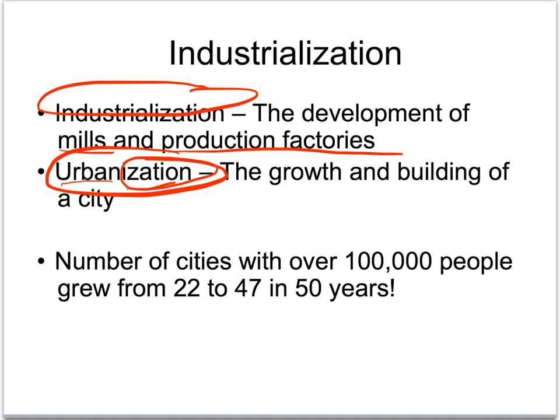Just to give you a statistic: the number of cities in England — Great Britain — with over 100,000 people in them grew from 22 cities to 47 in just 50 years. Imagine in your lifetime seeing twice as many large cities around you. In just 50 years, it's a huge number to grow so fast during this time period.